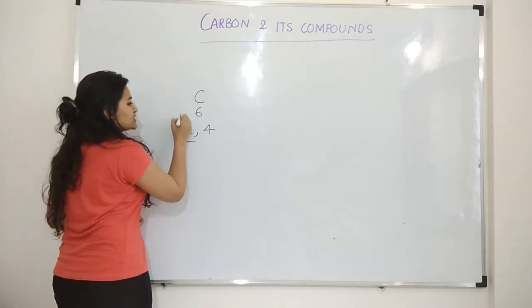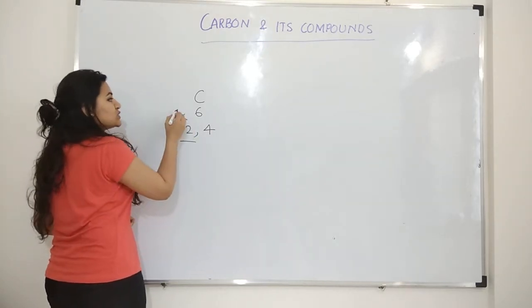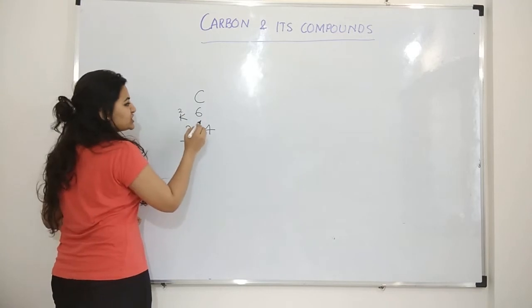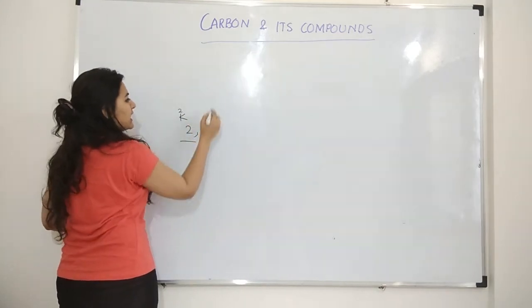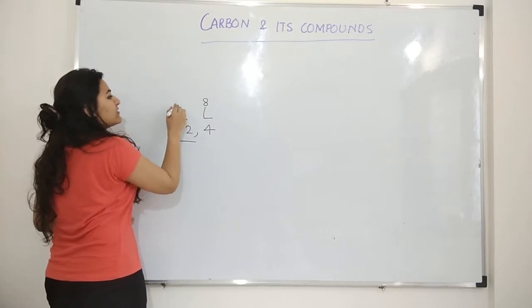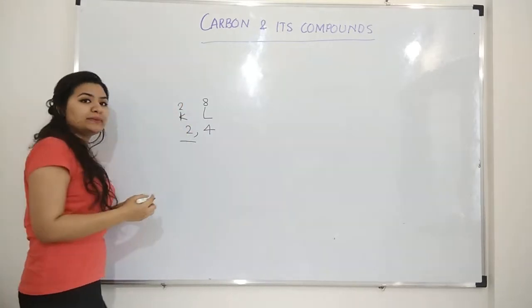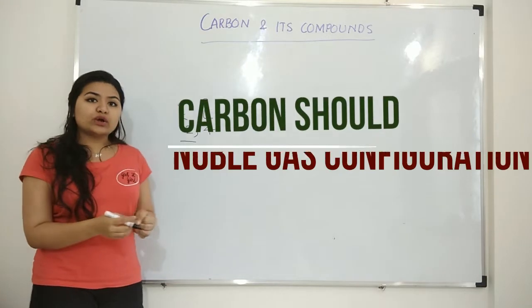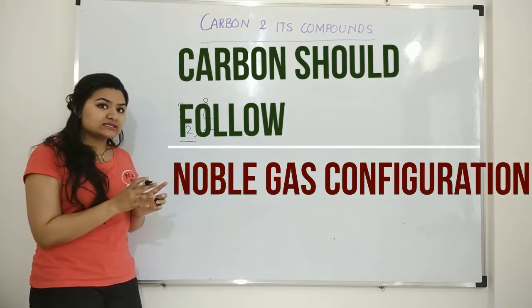We distribute them as 2,4. Now the first shell which is K, its capacity is also 2. Second shell L, its capacity is 8.